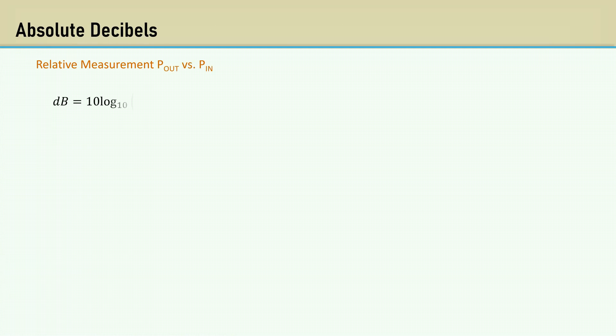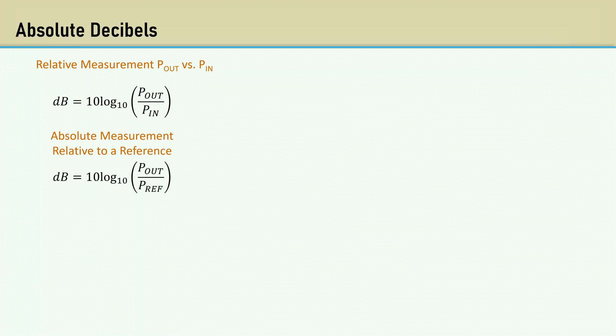So far, we have only used the decibel for relative measurements, like the output power relative to the input power, or the output voltage relative to the input voltage. The decibel is also used for absolute measurements. The use of absolute decibels has a fixed reference value in the denominator of the ratio. Here's a very common one using a milliwatt as the reference. Note there is a small case M placed after dB. As an example, 1 watt is plus 30 dBm.